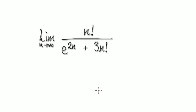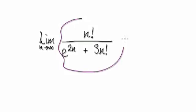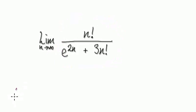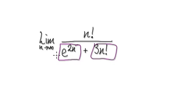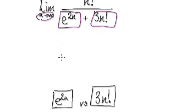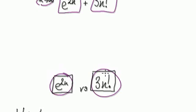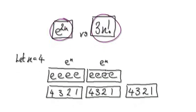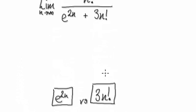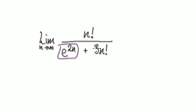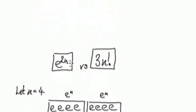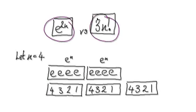Next one. Find the limit of this sequence as n tends to infinity. Press pause and have a go. Same technique, but we've got to realize which one would be bigger as n tends to infinity. It really boils down to e to the power of 2n versus 3n factorial — which would be larger as n tends to infinity.